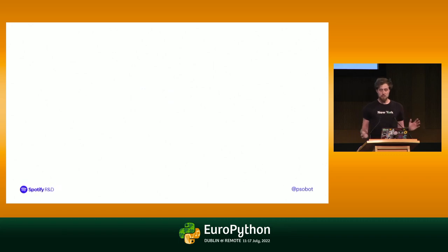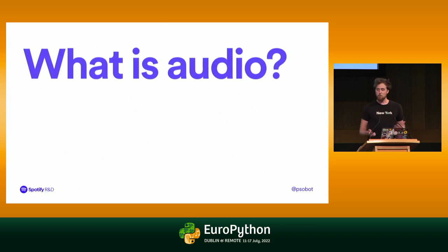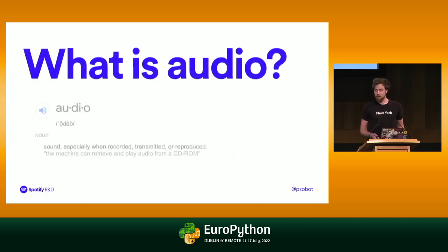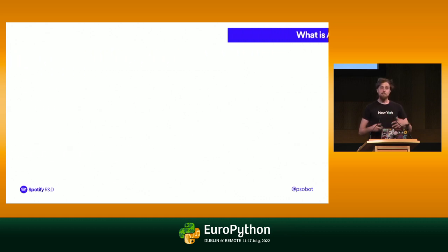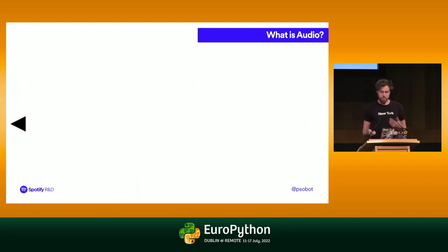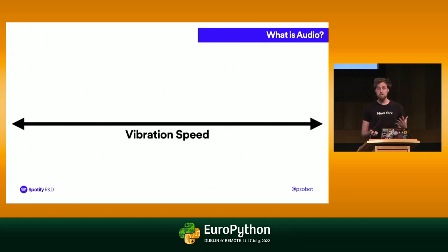Let's start off with the absolute basics. This is EuroPython — I don't expect any of you to have any knowledge of what audio is. Hopefully you know what Python is. Let's answer the first question: what is audio? Well, if you ask the dictionary, it'll tell you audio is sound, especially when recorded, transmitted, or reproduced. But that's still kind of vague. Sound is really just any vibration through the air that isn't too slow or too fast for our ears to pick up. Our ears are sensitive to a range of different vibration speeds.